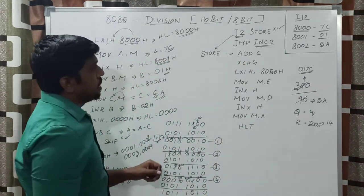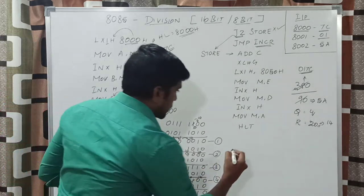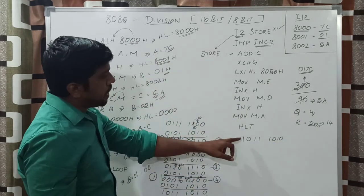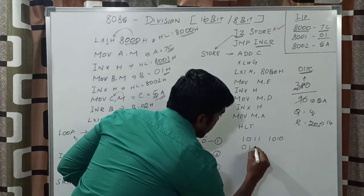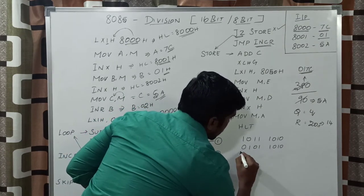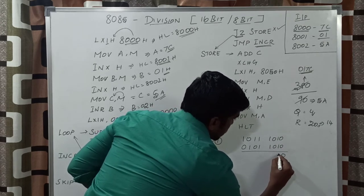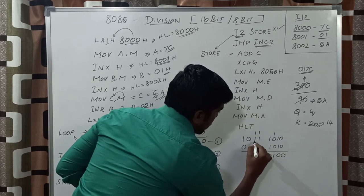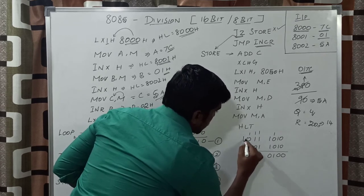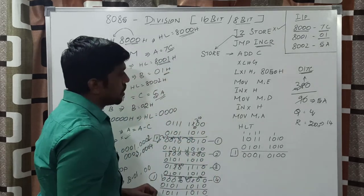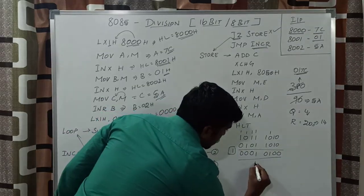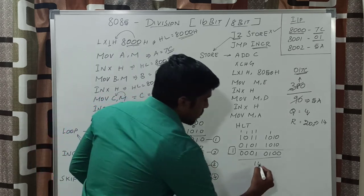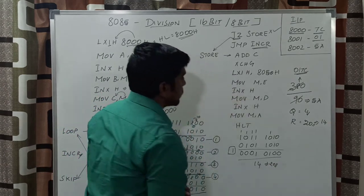At the store location, the instruction is ADD C. Whatever value is present in the accumulator is added with the C register content. The accumulator content had an over-subtracted value; the C register value is 5Ah. After addition, you get the result 14h. The equivalent decimal number is 20. This is the remainder value.